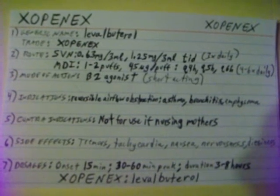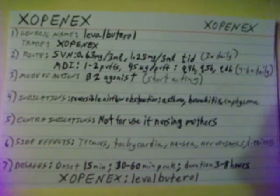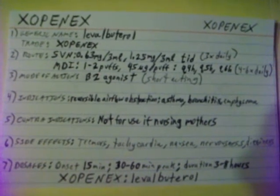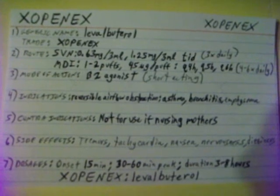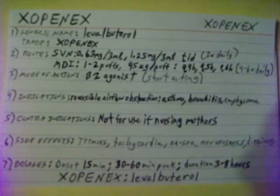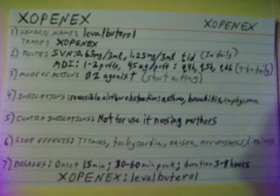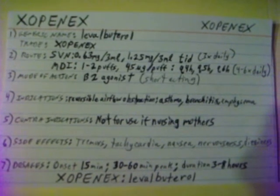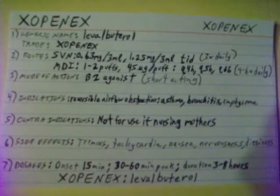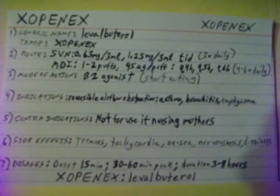Indications of Xopenex are reversible airway obstructions including asthma, bronchitis, and emphysema. Contraindications of Xopenex: it is not for use in nursing mothers. Side effects of Xopenex include tremors.